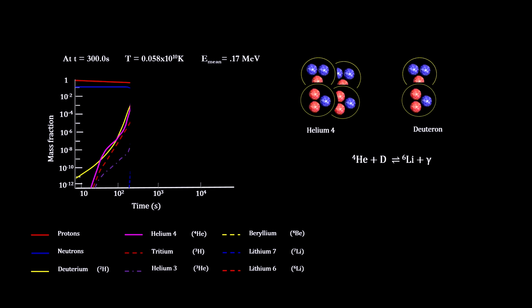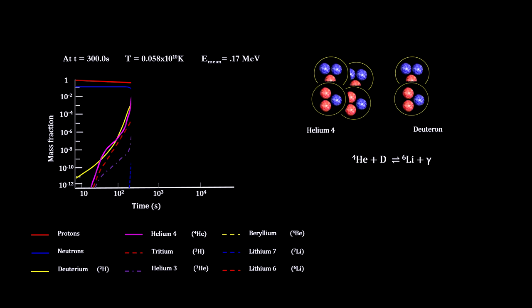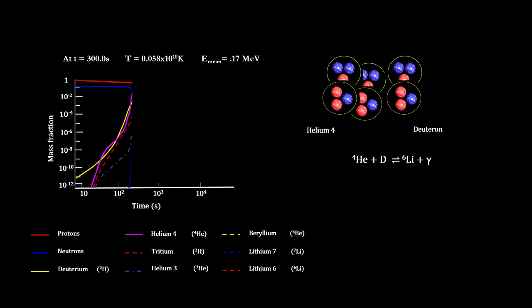Hydrogen resists combinations with protons and neutrons, so the creation of beryllium and lithium went more slowly, producing far less of these elements than helium.